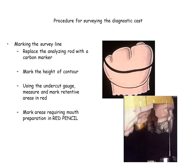56. The final path of placement will be the antero-posterior and lateral position of the cast in relation to the vertical arm of the surveyor that best satisfies all four factors — that is, guiding planes, retention, interference, and aesthetics. 57. Replace the analyzing rod with a carbon marker. 58. Mark the height of contour. Using the undercut gauge, measure and mark retentive areas in red. 59. Mark areas requiring mouth preparation.